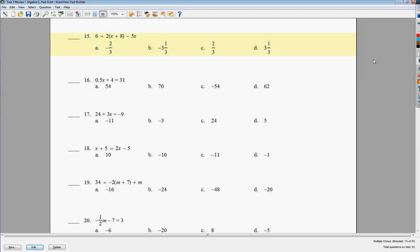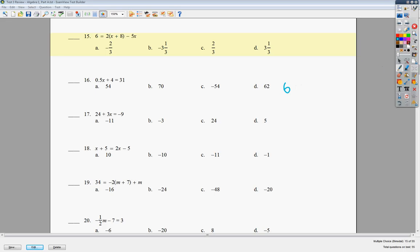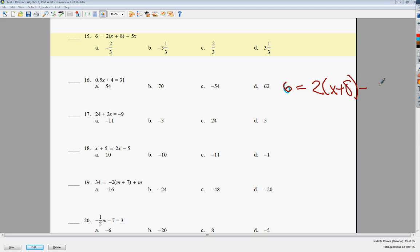So for number 15, it says 6 times the quantity, or 6 equals, if I can get the right color, 6 equals 2 times the quantity x plus 8 minus 5x. So I'm going to draw my line here. I'm going to put a 1 there just to remind myself. 2 times 1x is 2x. 2 times 8 is 16 minus 5x. Those are my like terms. 2 minus 5 is negative 3x.